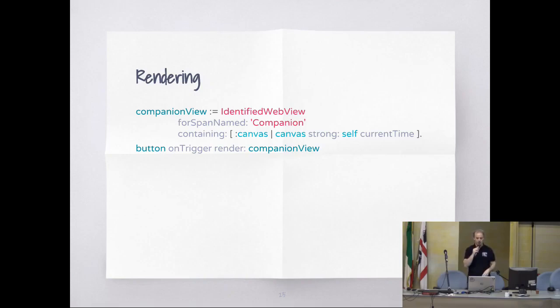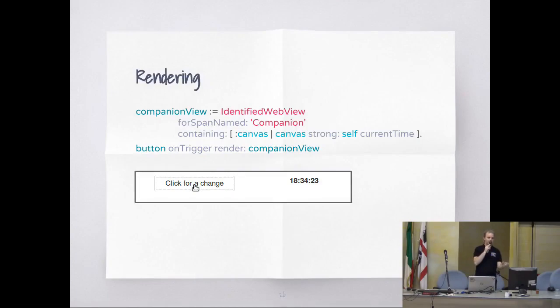What the thing will do is: when I click the button, it will go to the server, get a new rendering, and come back and render that in place, replacing the previous rendering. It's also an AJAX call.